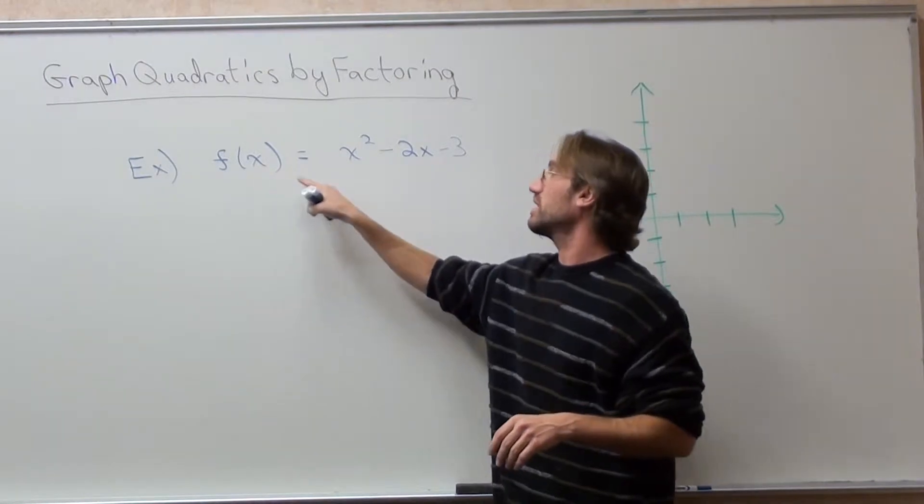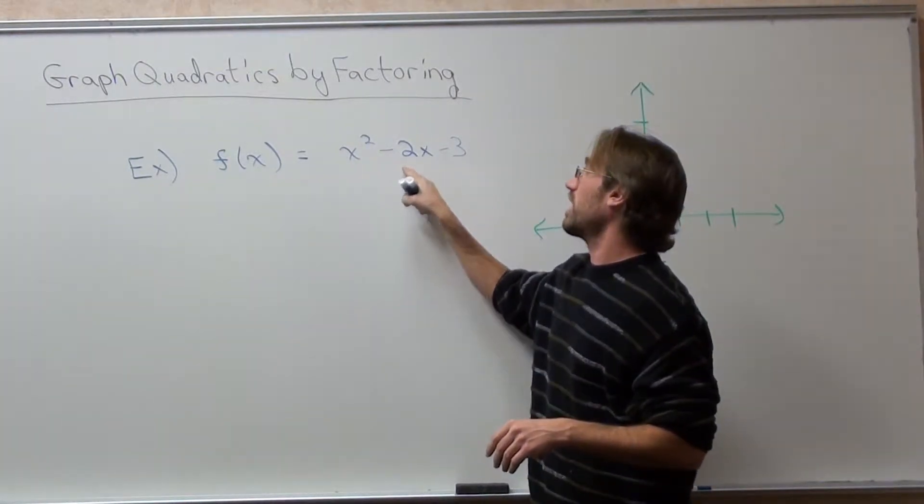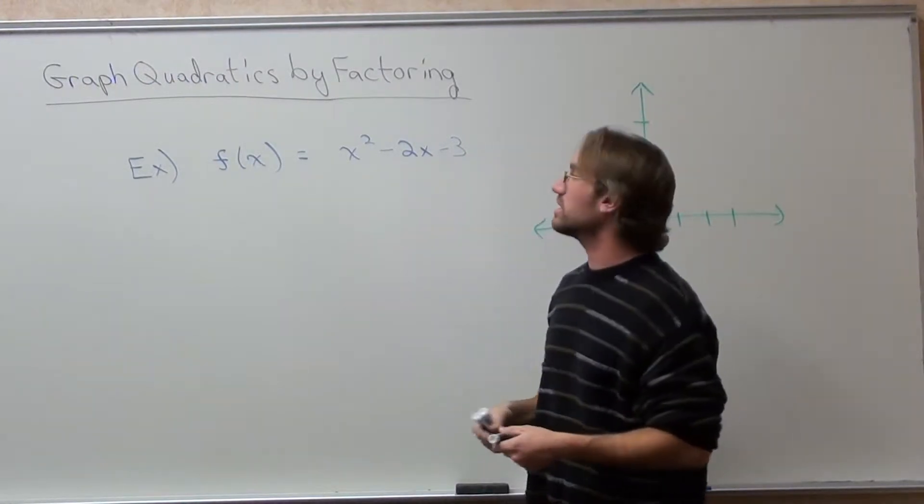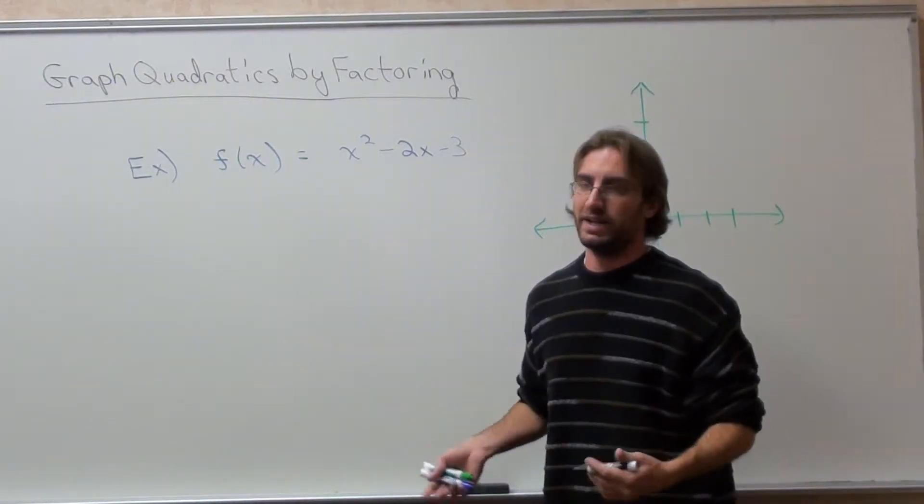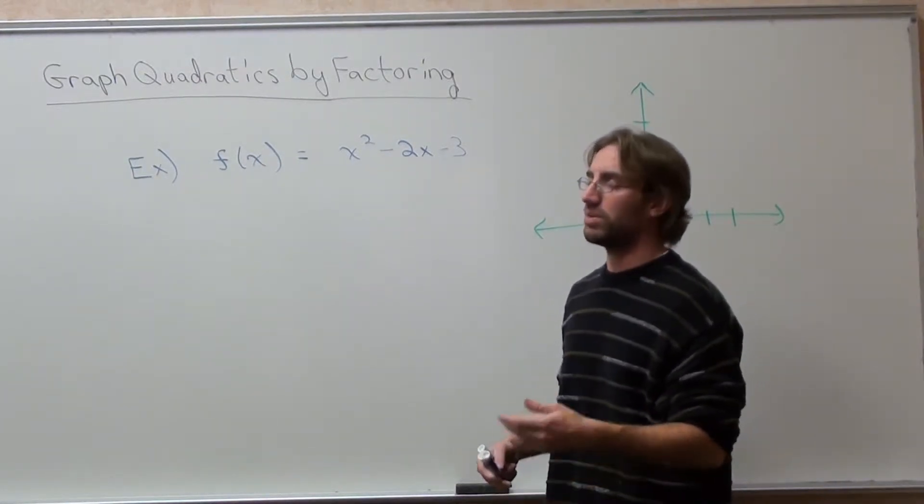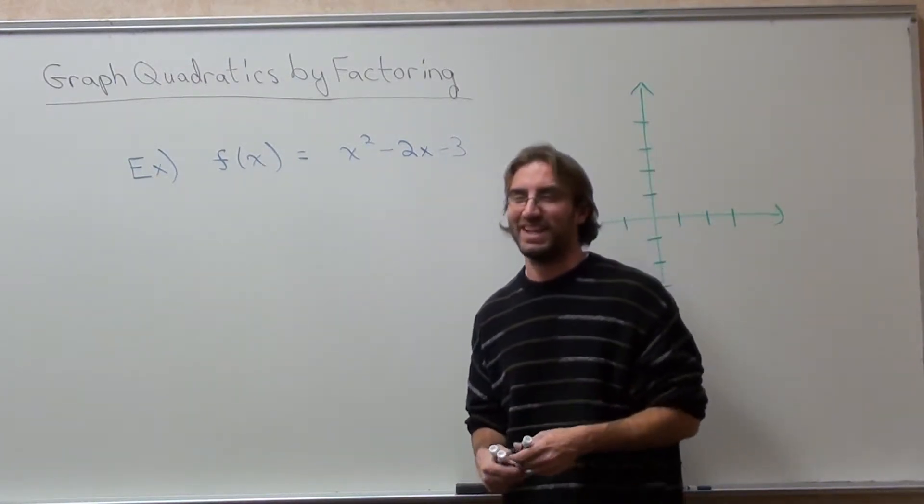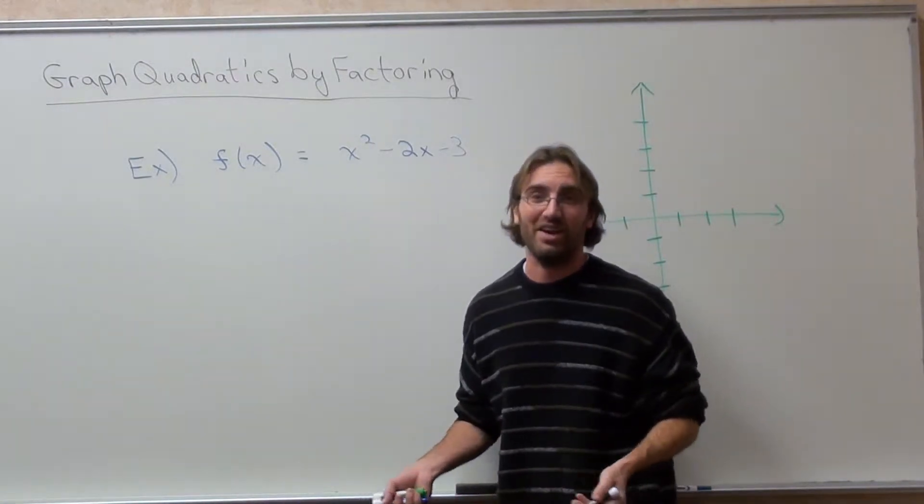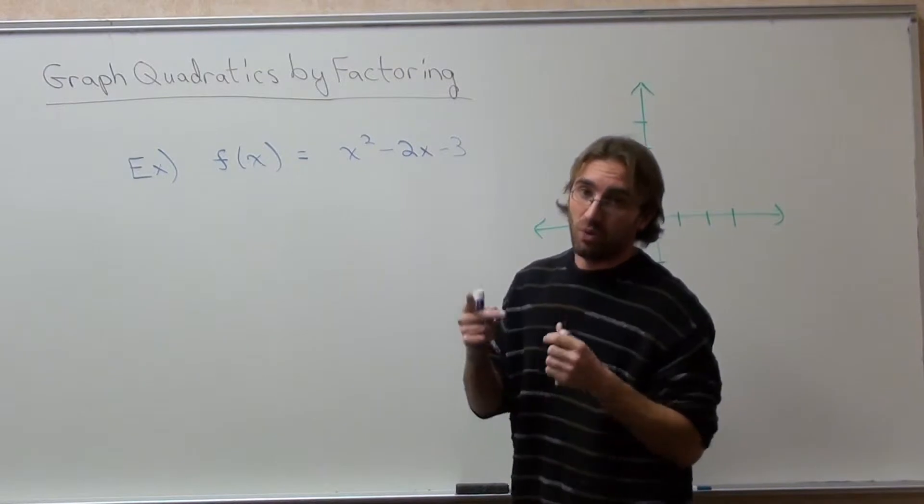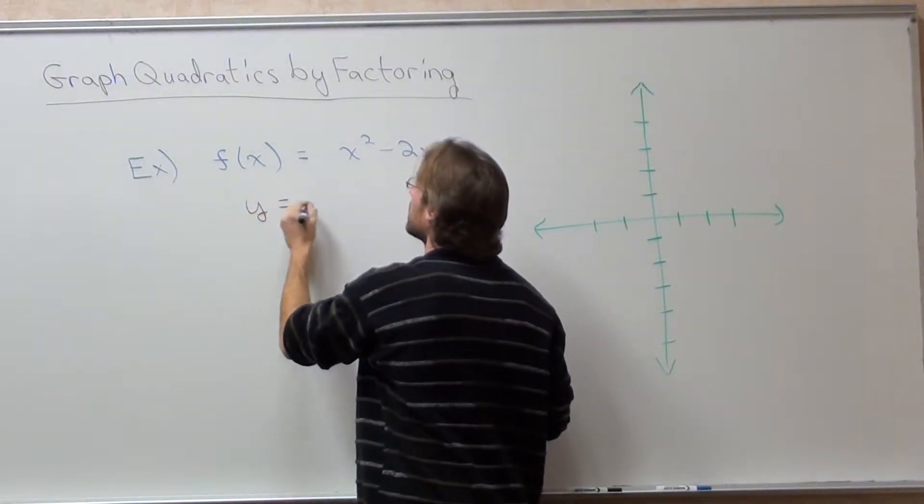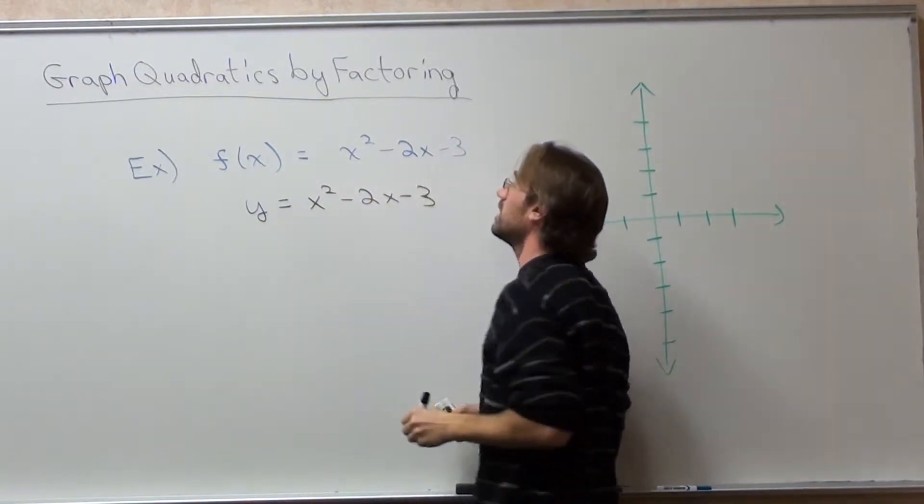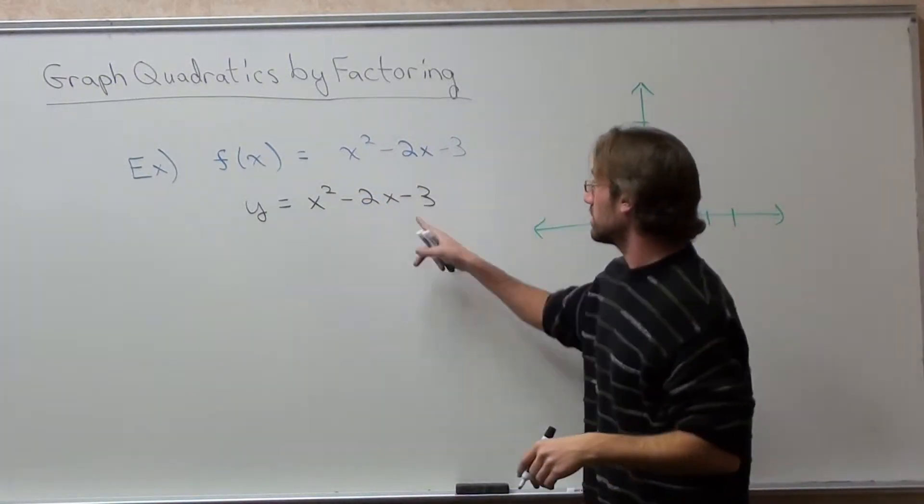This says the function of x equals x squared, subtract 2x, subtract 3. If you remember my tangent about functions, f(x) just basically means y. Well, it means your output value and you can just replace it with a y. I suppose some people wouldn't really like that explanation, but I really don't care. It makes things easier for students. So here we go. I've got y equals x squared minus 2x, subtract 3.